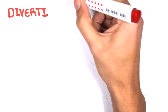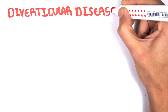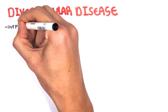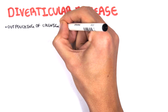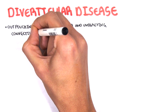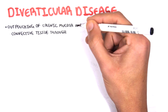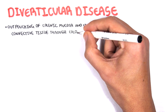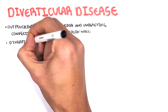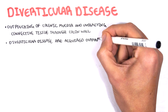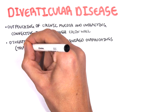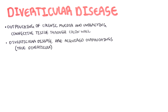Diverticular disease is where you have outpouchings of the colonic mucosa and underlying connective tissue through the colon wall. Diverticular disease involves acquired outpouchings, which make them false diverticula — we will compare between true and false diverticula in this video.